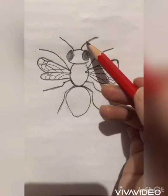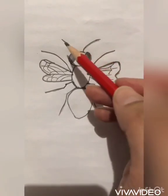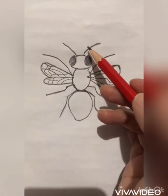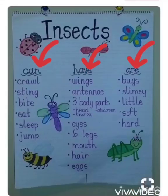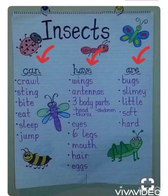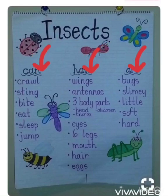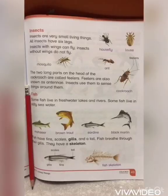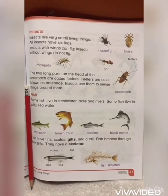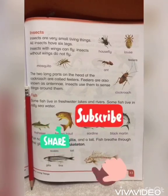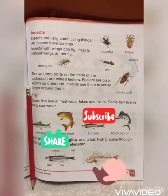The antennae on the head of insects help them to sense things going around them. So this is it for today — I hope you have learned something from it. Don't forget to subscribe, share, and like. Thank you.